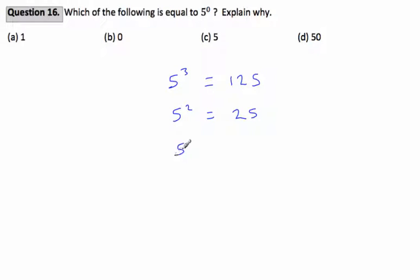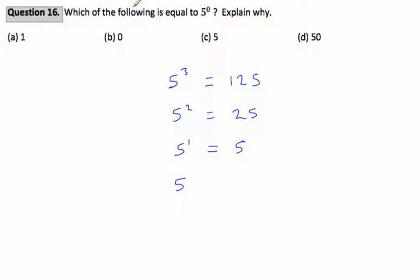If we follow the pattern on the left, we can see that the power is decreasing by 1: 3, 2, 1. So 5 to the power of 1, as some of you may already know, is just 5 — which is 5 once. So following the pattern down from 3, 2, 1, the next number would be 0, giving us 5 to the power of 0.